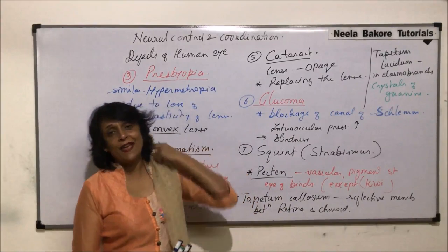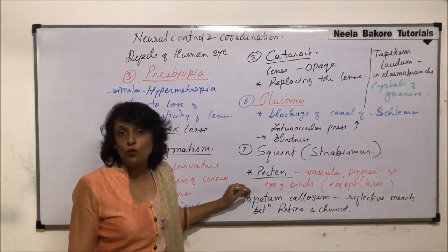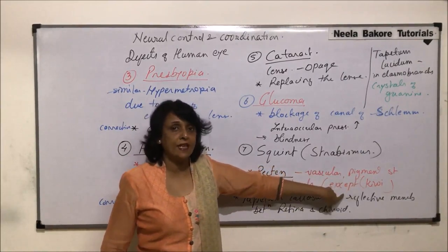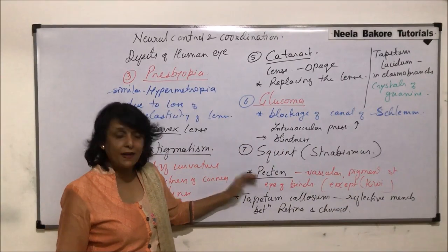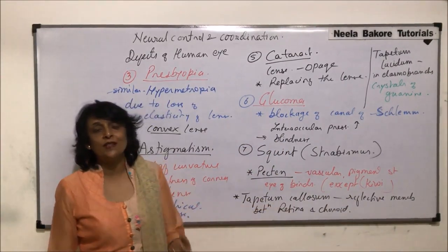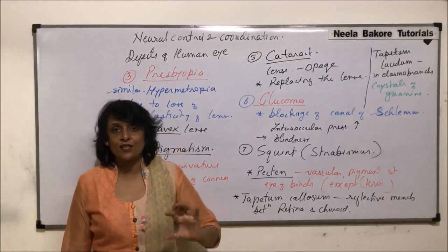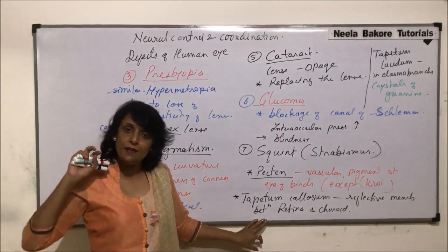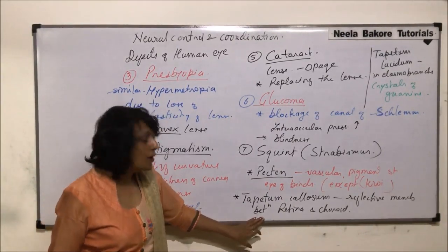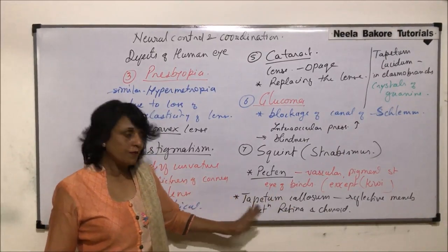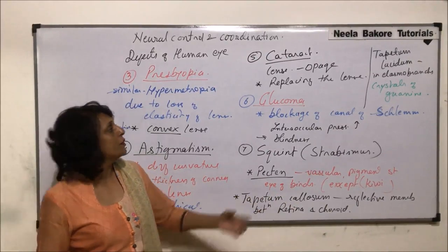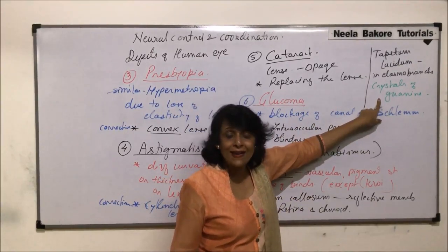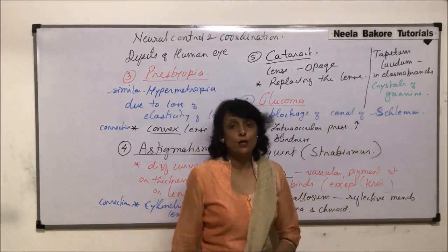So these two are very important things. Pecten — questions are often asked about which animals have it, and the only exception is kiwi, whose eyes lack pecten. And tapetum callosum causes the eyes of animals like cats, dogs, cows, and buffaloes to glow in the dark when light is flashed. In elasmobranchs, a similar layer with the same function — tapetum lucidum — contains crystals of guanine and has a different name.